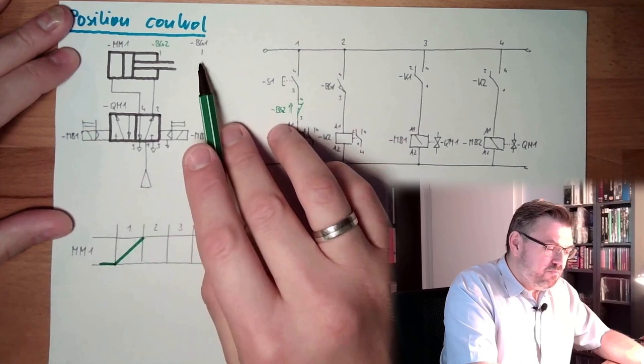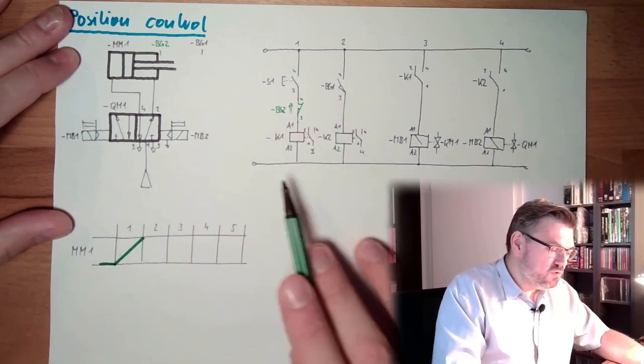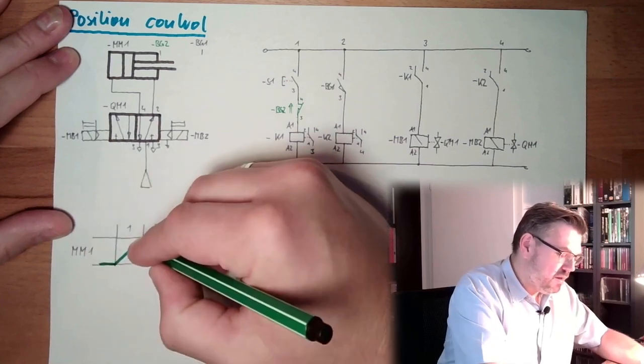And if we reach then BG1 here at the end, K2 is operated. K2 is operated. MB2 is operated. Switched back. Go inside.